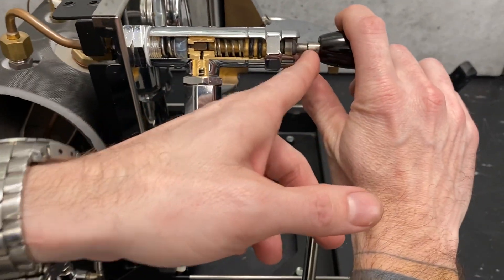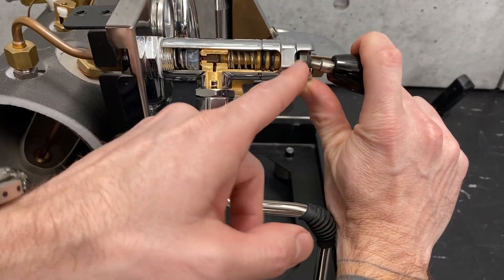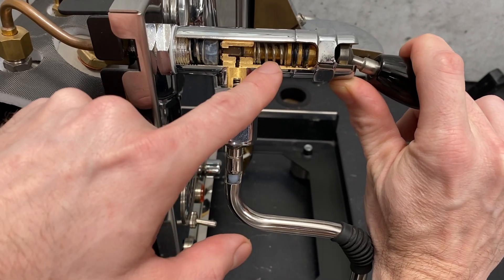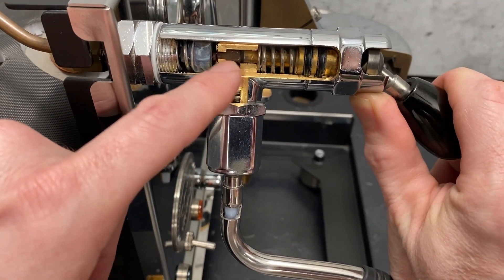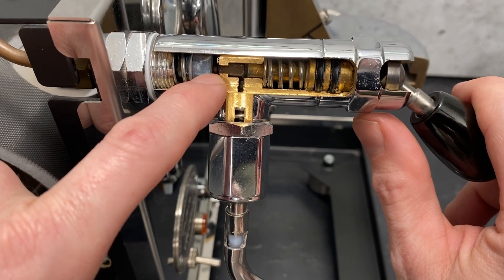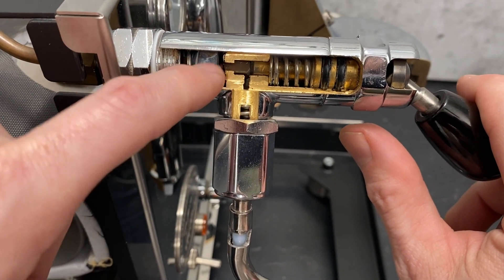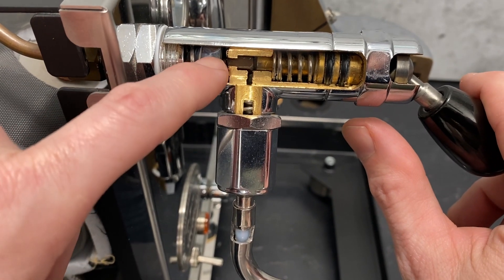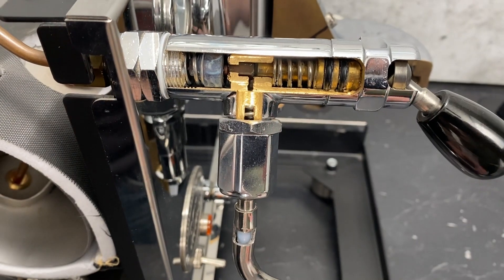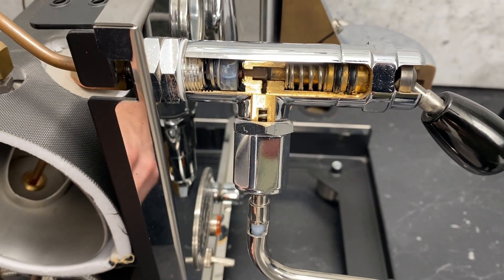When you push down on the joystick here, it moves a cam, which pushes this whole assembly back. Now this is the main one that we're worried about. This is what is opening up the flow of steam. So this actuator down here is very similar to the one that's at the very bottom of your E61 group head.